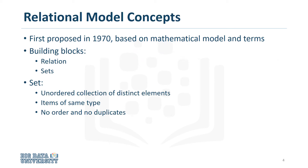The relational model was first proposed in 1970 and is based on a mathematical model and mathematical terms. The building blocks of the relational model are relation and sets. The relational model of data is based on the concept of relation. A relation is a mathematical concept based on the idea of sets.